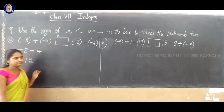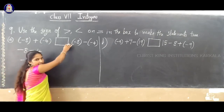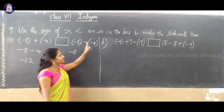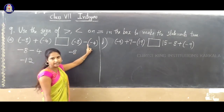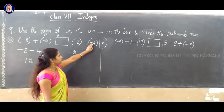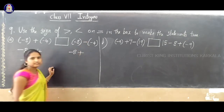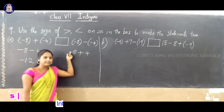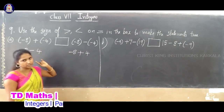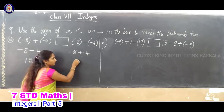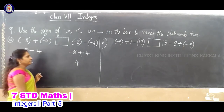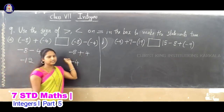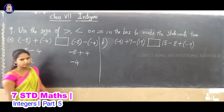Now simplify RHS: minus 8 minus (minus 4). Minus into minus gives plus, so minus 8 plus 4. Different signs, subtraction: 8 minus 4 is 4. Greater number is 8 with sign minus, so RHS equals minus 4. Comparing: minus 4 is greater than minus 12.